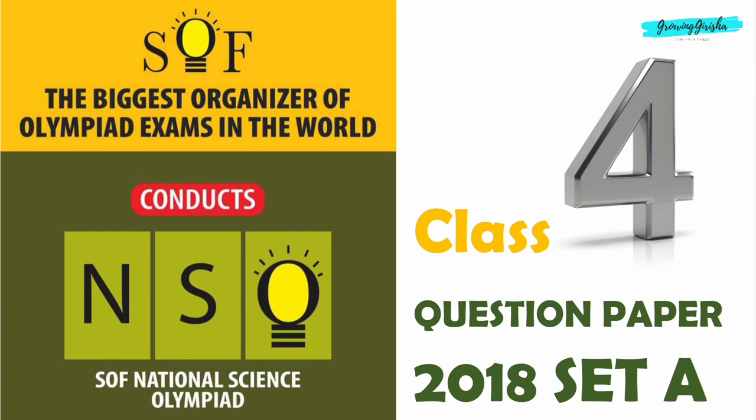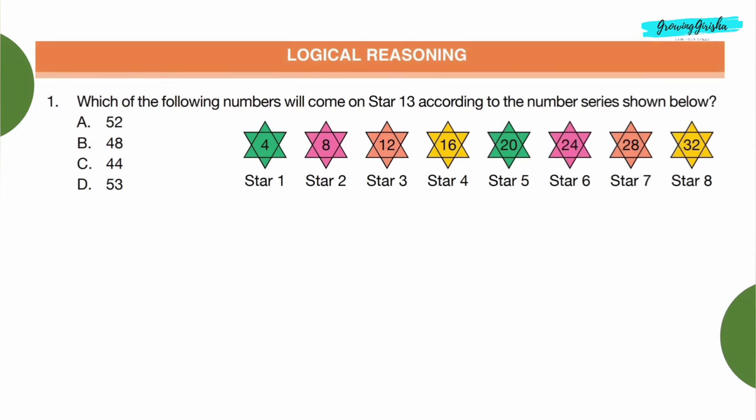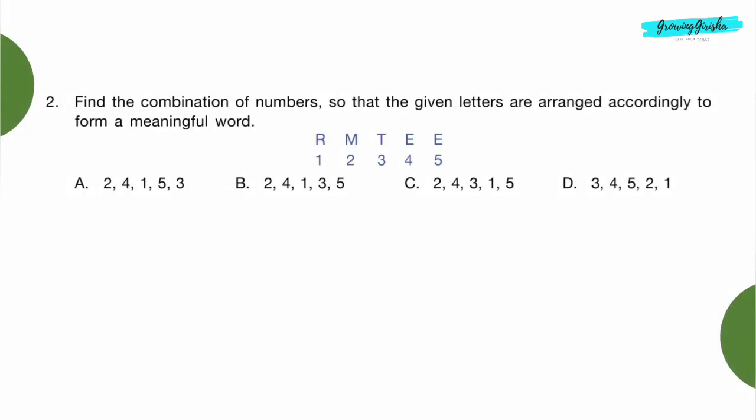National Science Olympiad Question Paper 2018 Set A for Class 4. Logical Reasoning. Question 1: Which of the following numbers will come on Star 13 according to the number series shown below? In the given series, each number is a multiple of 4, so Star 13 will be 4 into 13, that is 52. Option A.